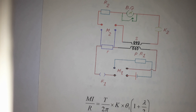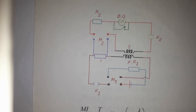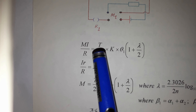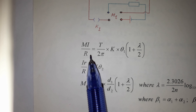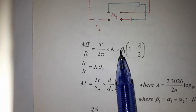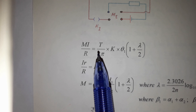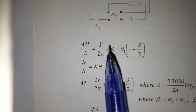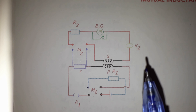This is the circuit for determining mutual inductance between two coils. The formula is MI/R equals K times (T/2π) times theta_1 times (1 plus lambda/2). However, the constant K of the ballistic galvanometer is unknown to us, so to eliminate it, we need to perform a secondary experiment.